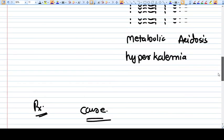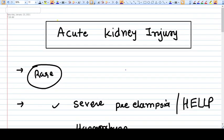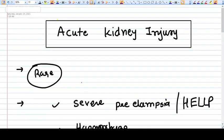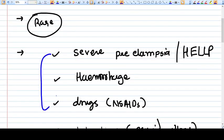Hello everyone, in this video we are going to talk about acute kidney injury in brief. Fortunately, it's a rare event. What are the causes of acute kidney injury? The very common problem is severe preeclampsia and HELLP syndrome.